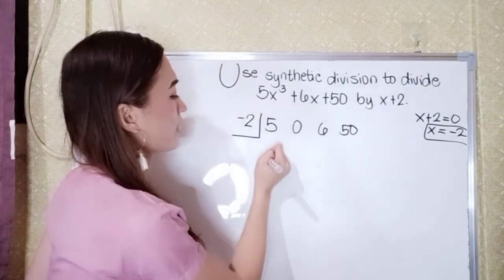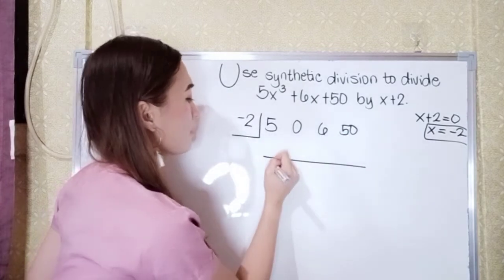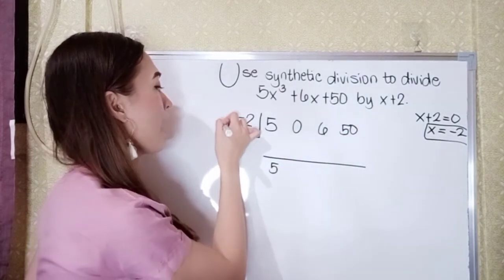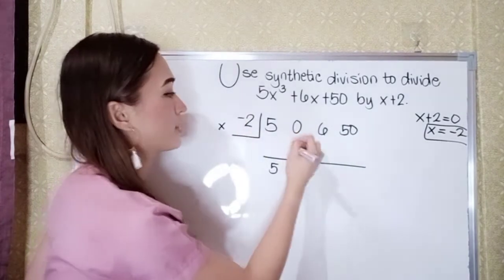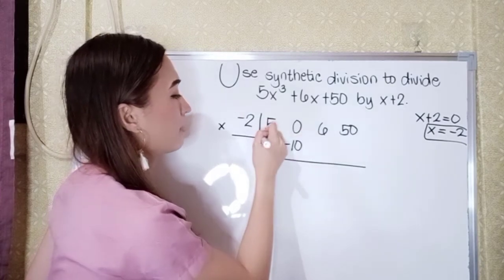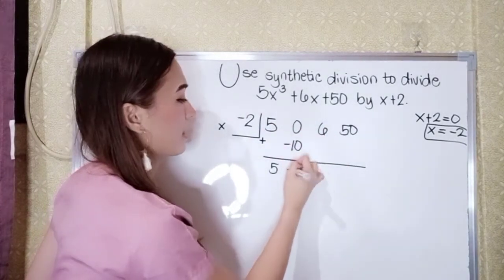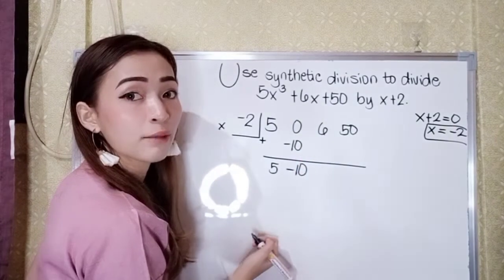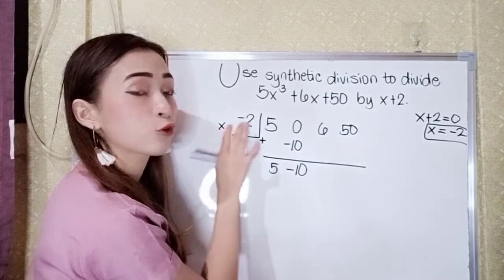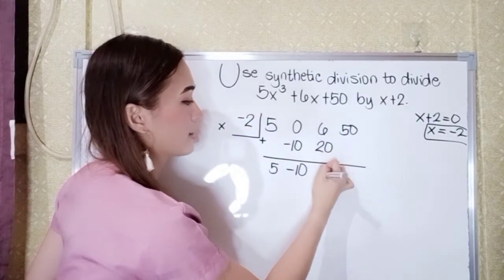Now let's divide. Bring down 5 first. 5 times negative 2 is negative 10. Then 0 plus negative 10 is negative 10. Multiply: negative 10 times negative 2 is positive 20. Then 6 plus 20 is 26.